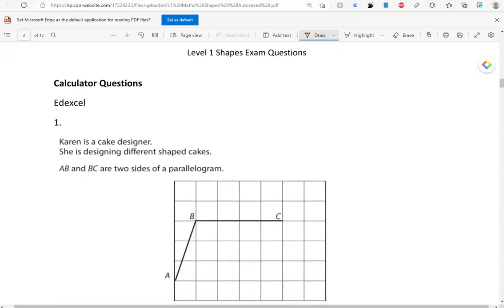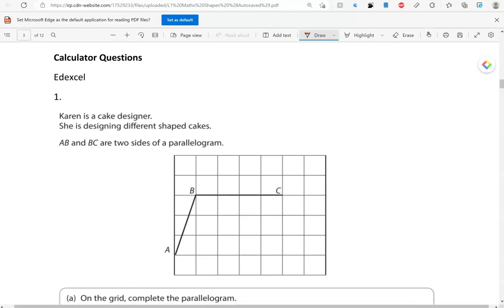We're now moving to the calculator questions. Karen is a cake designer. She's designing different shaped cakes. A, B, and C are two sides of a parallelogram. On the grid, complete the parallelogram. So, a parallelogram has parallel sides, as the name suggests. So, I'm going to draw the next side here.